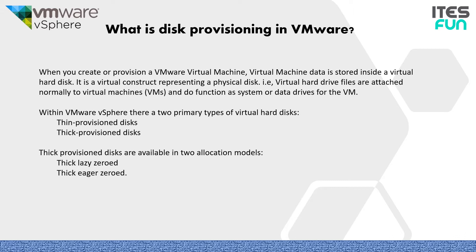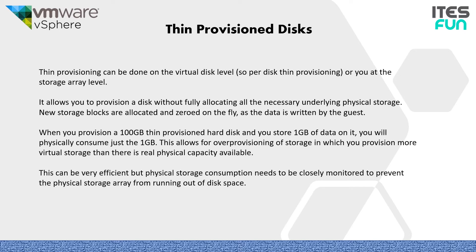If we look at thick provisioning, we have two allocation models: lazy zeroed and eager zeroed. We will discuss this later. So what are thin provision disks? These can be done on the virtual disk level. It allows us to provision a disk without fully allocating all the necessary underlying physical storage. New storage blocks are allocated and zeroed on the fly as data is written by the guest. When we provision a 100 GB thin provisioned hard disk and store 1 GB of data on it, we will physically consume just 1 GB.